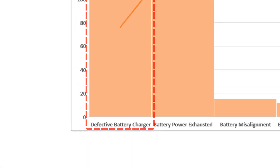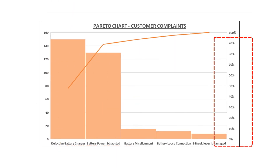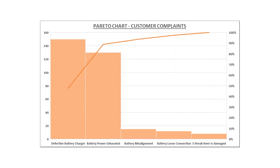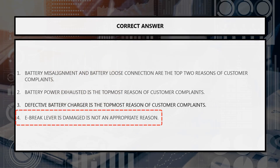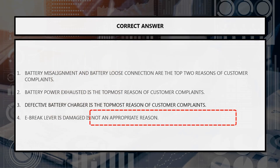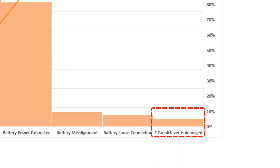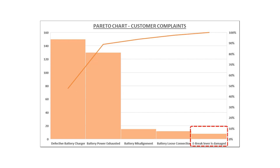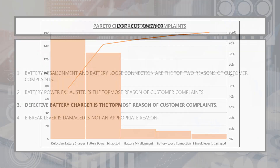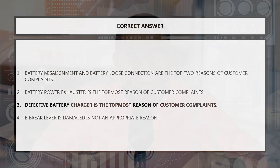Yes, this is absolutely the correct answer. But before concluding this as the final answer, let's look at the fourth option. E-brake lever is damaged is not an appropriate reason — this is not a correct option, as the Pareto chart cannot determine which of the given reasons is correct or incorrect. Determining if a given reason is correct or incorrect is the job of the subject matter expert. Thus, based on the analysis of the Pareto chart, the correct answer is option three.